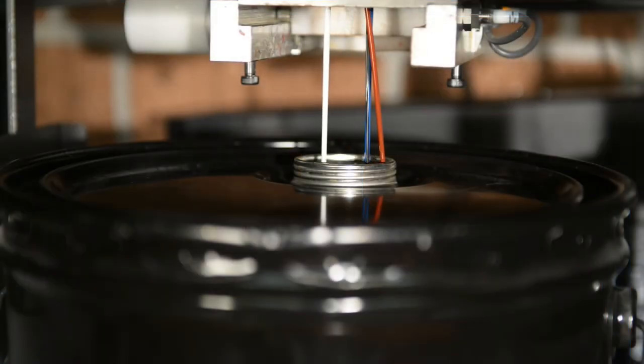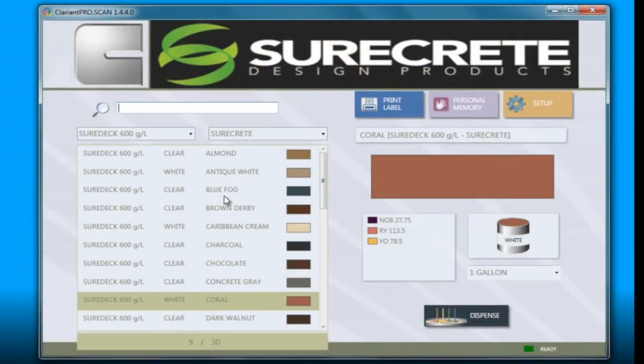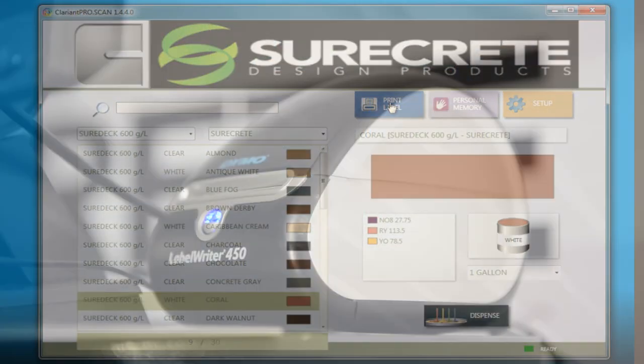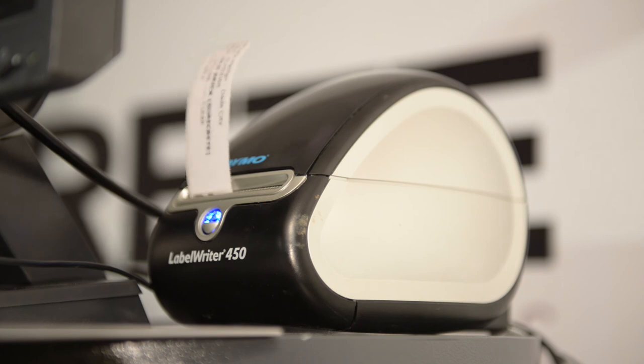Wait as the auto dispenser puts the needed amount of each pigment into the container. Click Print Label. Place the label on the container.